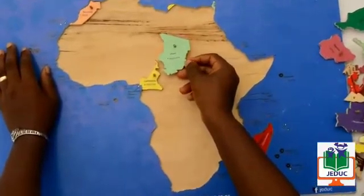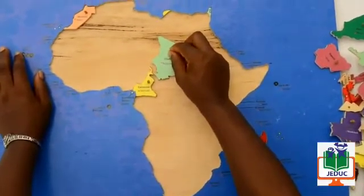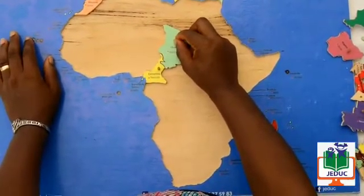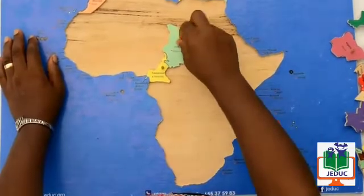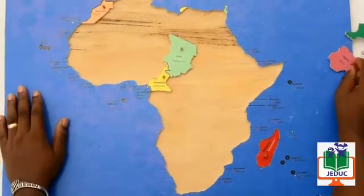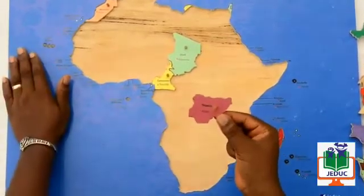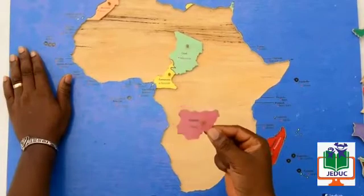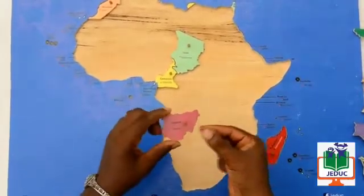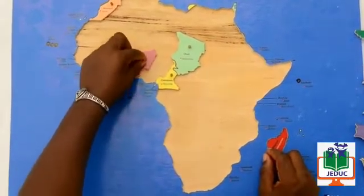By using the shapes, we should match the shapes with the border of Cameroon like this. Here is the location of Chad. Let's pick another country, Nigeria. We know that Nigeria has Cameroon as a border. So, what we have to do is to match the shape of Nigeria with the border of Cameroon like this.